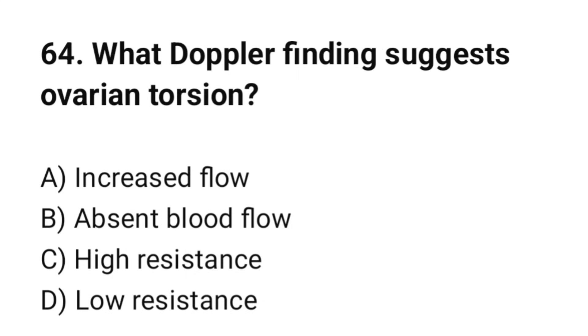Question number 64. What Doppler findings suggest ovarian torsion? The correct option is B: Absent blood flow.